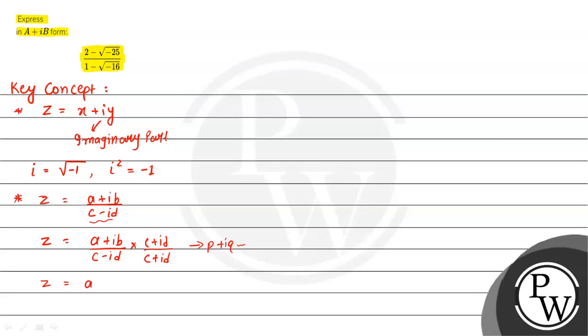This equals ac plus bd plus ad minus bc i, divided by c squared plus d squared. So now this is p plus iq in complex form. This is the real part and this is the imaginary part. We will use this concept to solve this question.